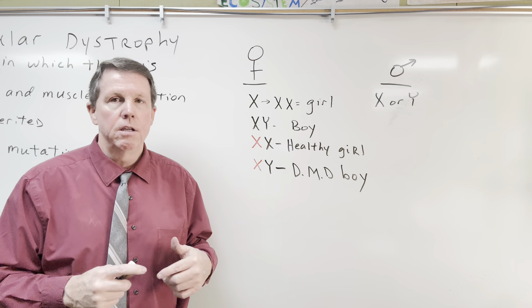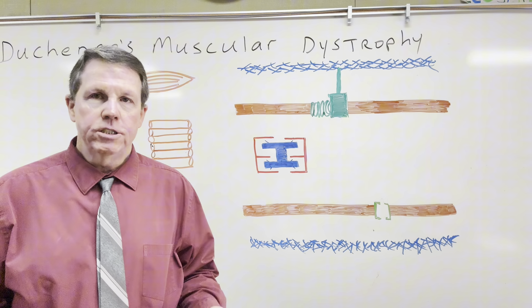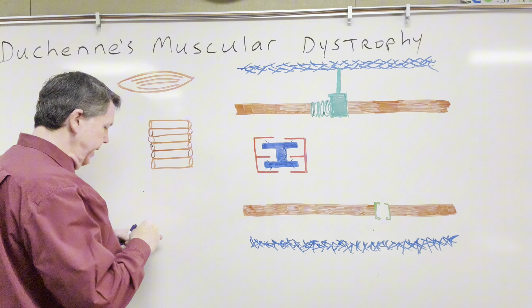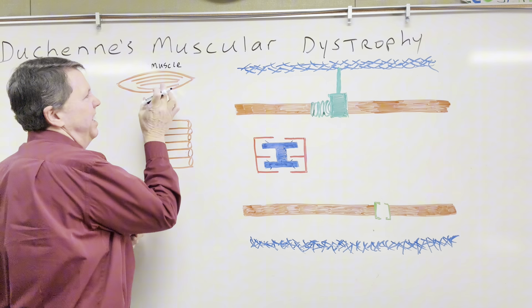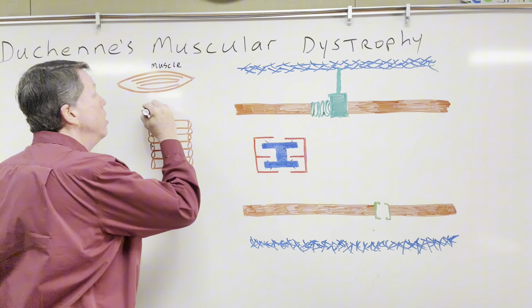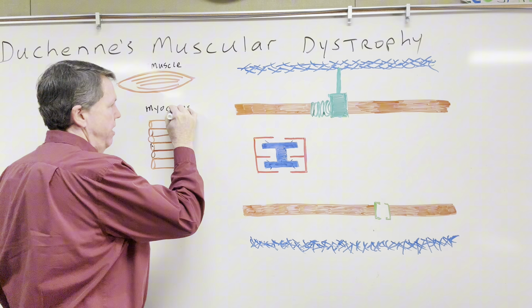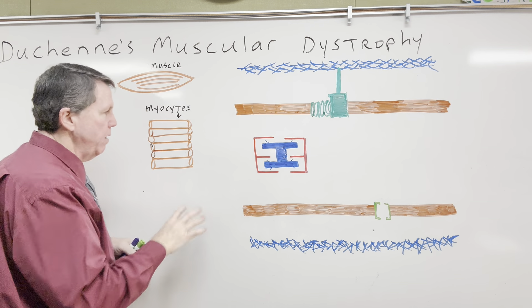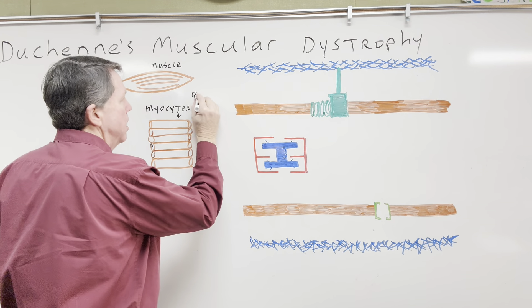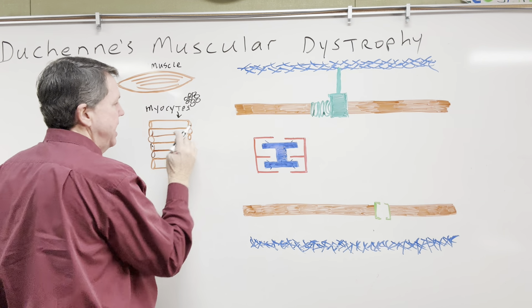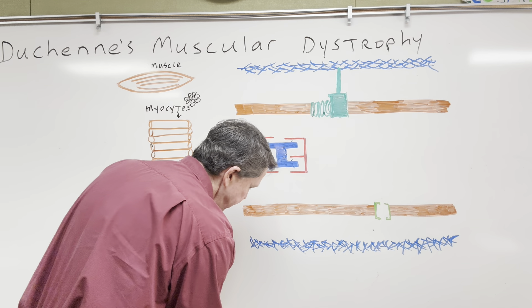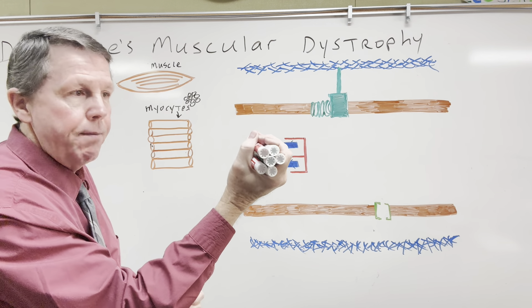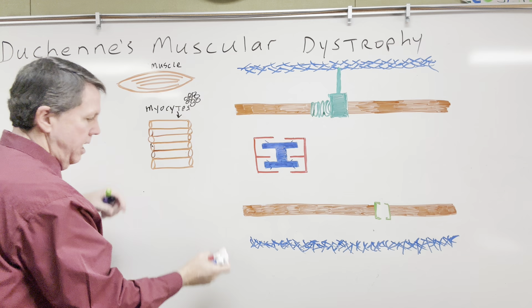Now let's look at what happens in muscular dystrophy, but first we need to look at how the muscle actually functions. This right here is my muscle, and we're going to take a close-up view because muscle is made up of muscle cells called myocytes. You have a whole bunch of these inside your muscle. Looking at a cross-sectional view, you'd see a whole bundle of them together.